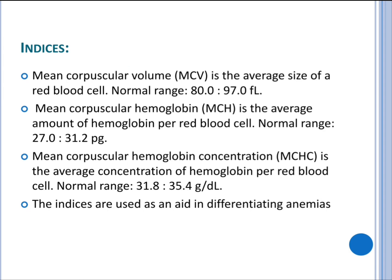Red blood cell indices: Mean corpuscular volume (MCV) is the average size of a red blood cell, with a normal range of 80 to 97 femtoliters. Mean corpuscular hemoglobin (MCH) is the average amount of hemoglobin per red blood cell, with a normal range of 27.0 to 31.2 picograms. Mean corpuscular hemoglobin concentration (MCHC) is the average concentration of hemoglobin per red blood cell, with a normal range of 31.8 to 35.4 grams per deciliter. These red blood cell indices are used as an aid in differentiating anemia.